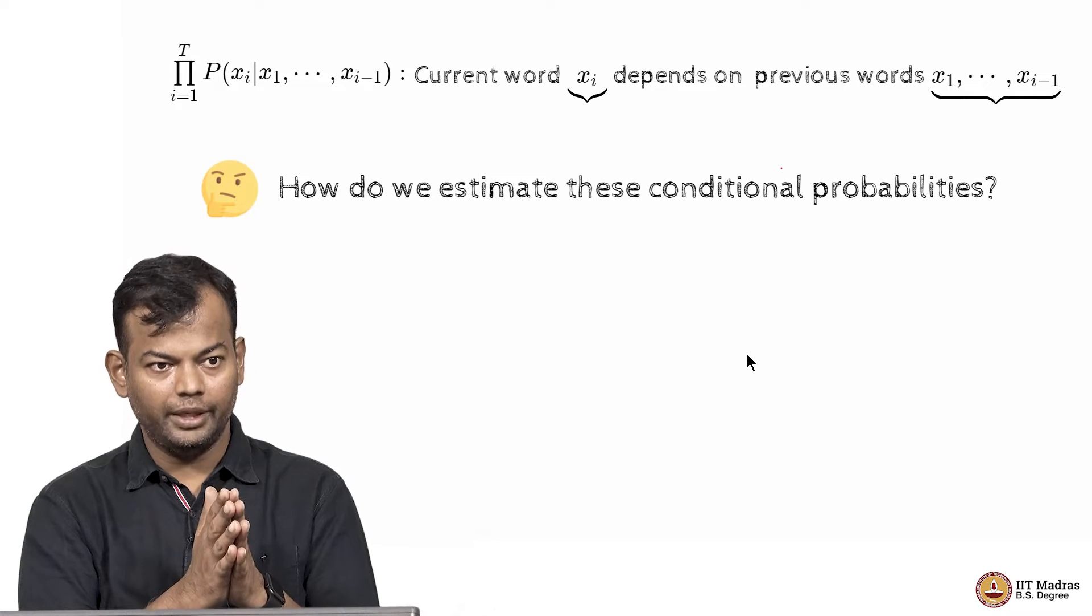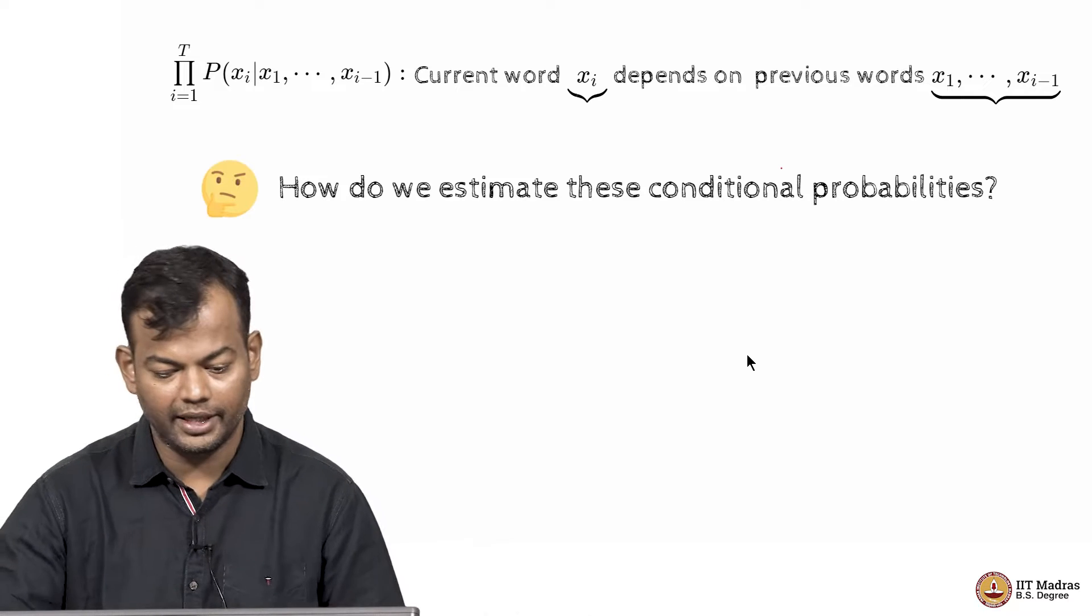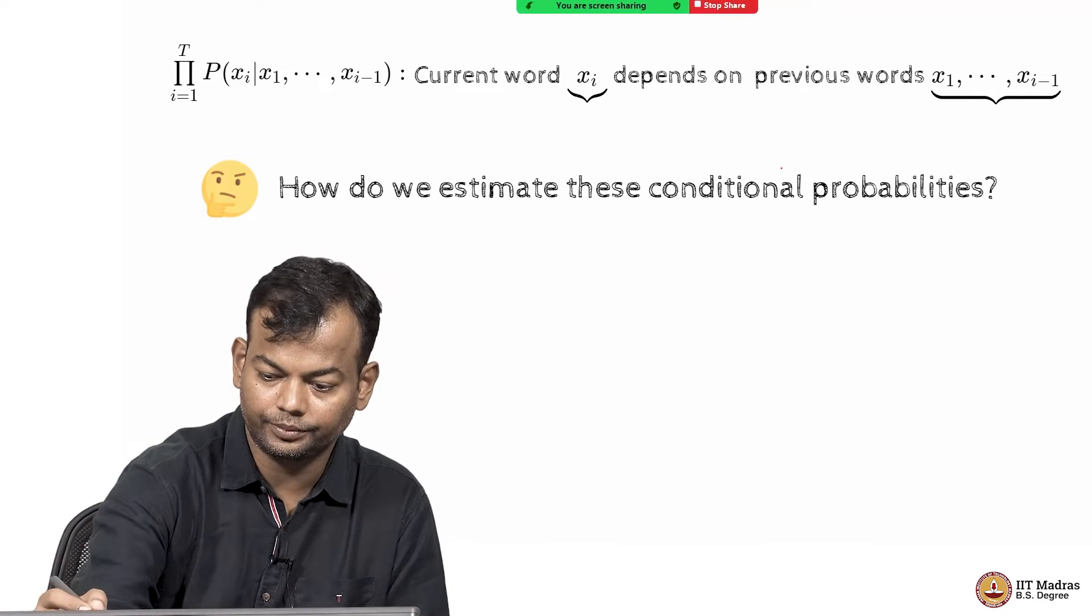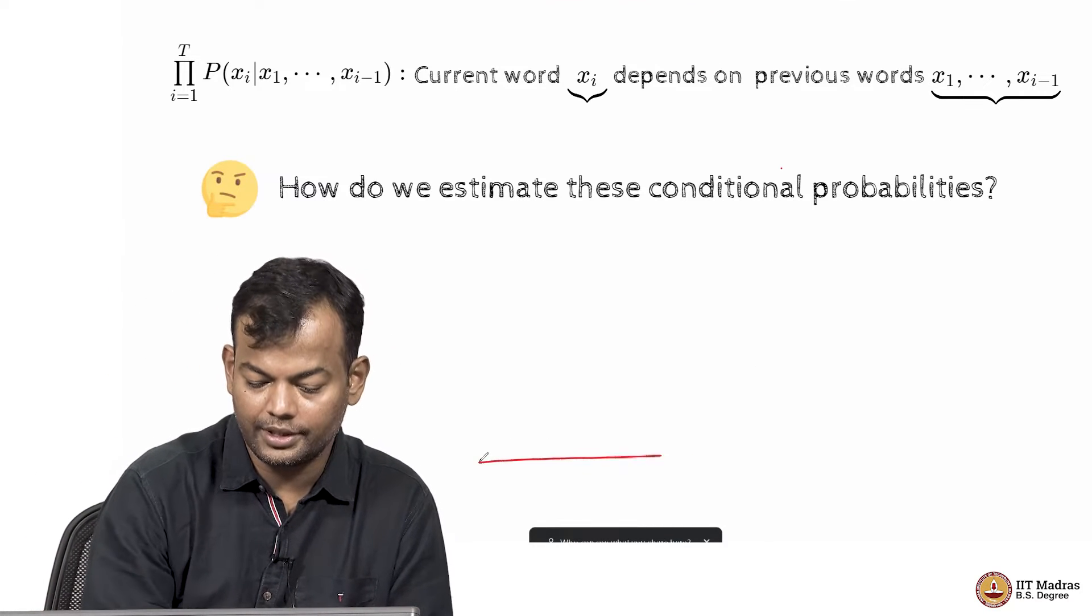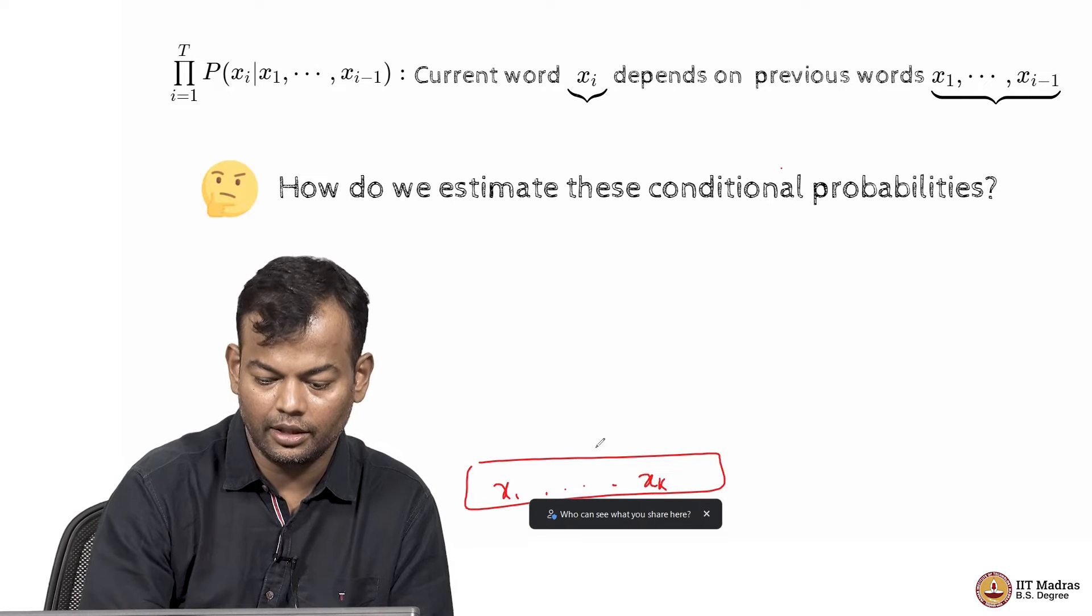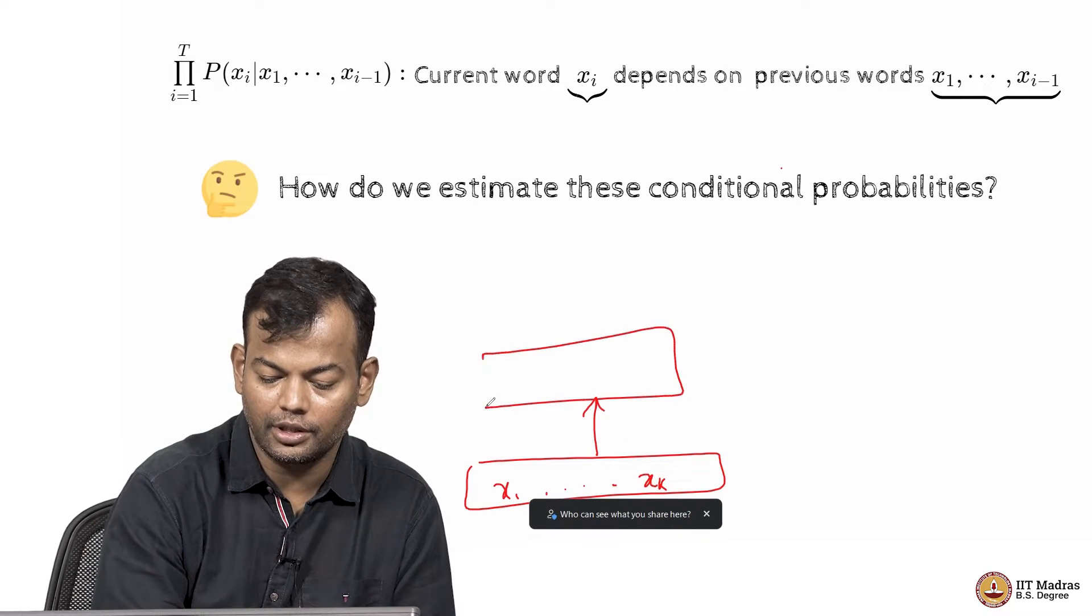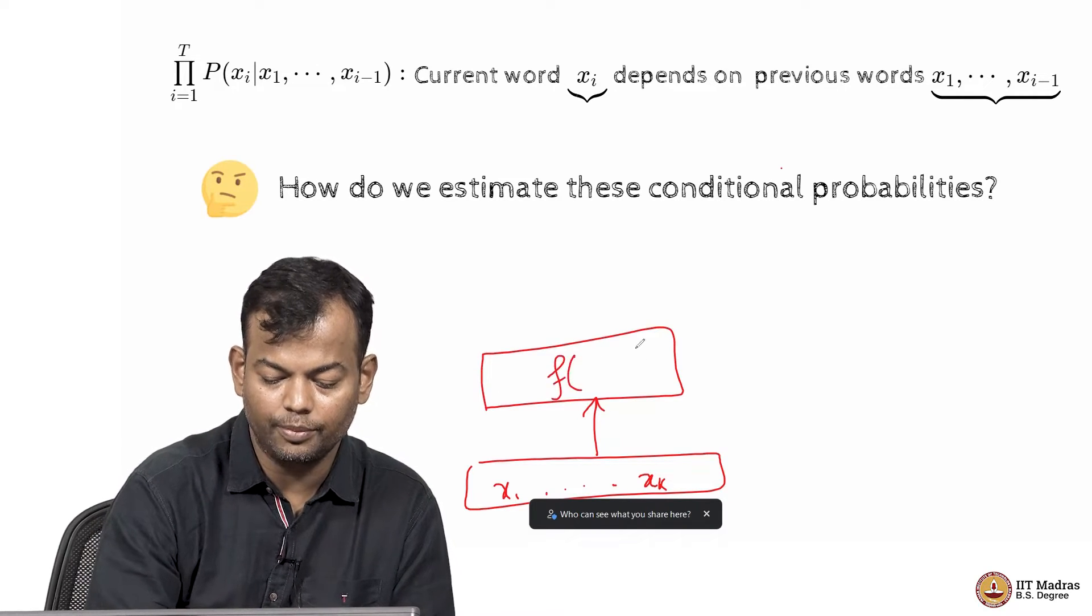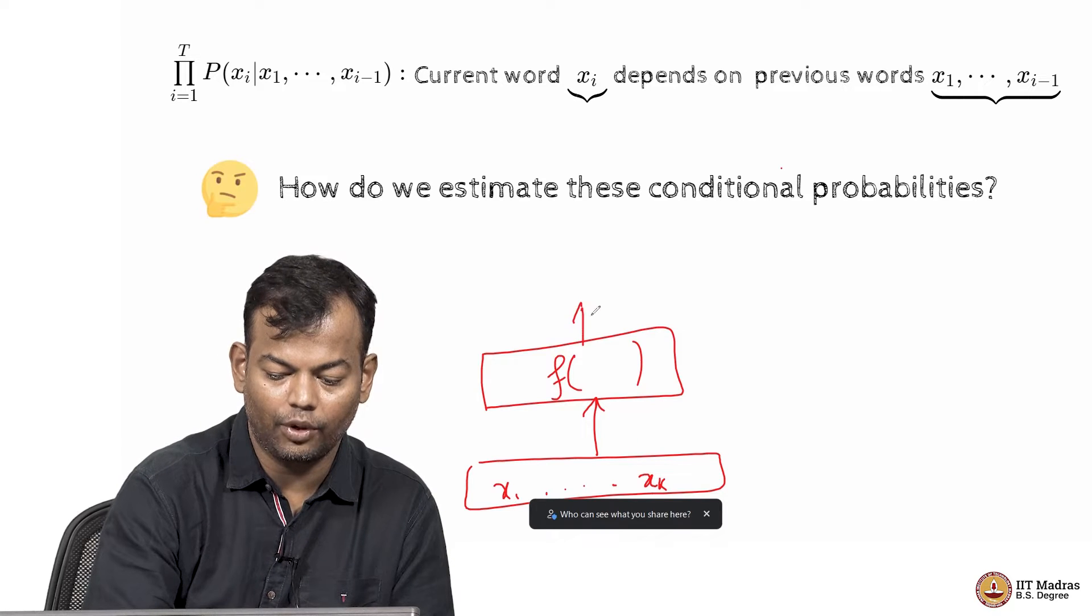I got my training data for free. So, I have my input sequence x1 to some arbitrary xk. I want a function which takes this as input and then what does it do?